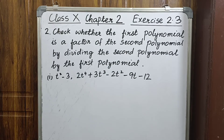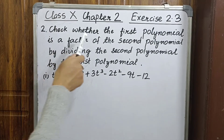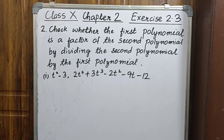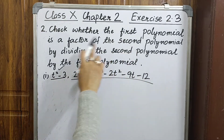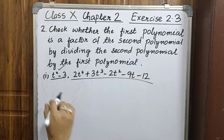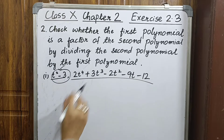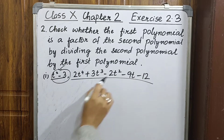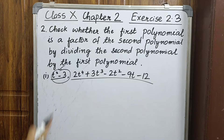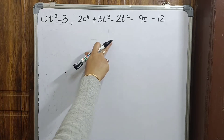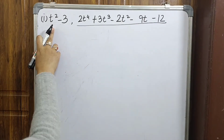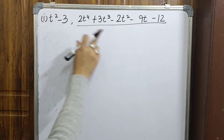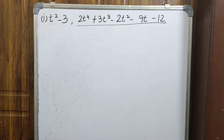Let's get started. Question Number 2: check whether the first polynomial is a factor of the second polynomial by dividing the second polynomial by the first. If we do not get a remainder, then the first polynomial is a factor of the second polynomial. If we do get a remainder, then it is not a factor.